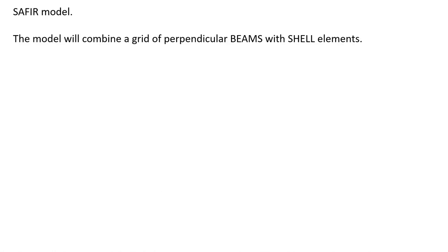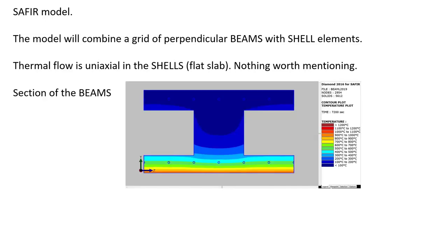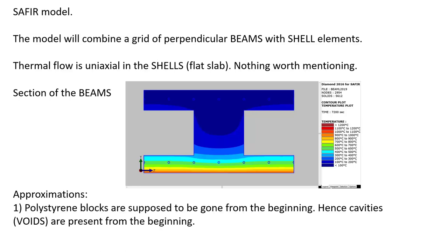The Saphir model will combine a grid of perpendicular beams and shell elements. The shell elements in the parts of the slab which is a flat slab. Thermal flow in the shells is uniaxial so there is nothing worth mentioning. The section of the beams would be like this: each beam finite element which has a section which is an H section, where you can recognize the rib which is between two insulating blocks. So each beam finite element would represent a rib between two insulating blocks. There are some approximations in that model. First of all the polystyrene blocks are supposed to be gone from the beginning. So the cavities are present from the beginning of the simulation. And of course the thermal model is 2D because it is supposed to be used in a beam element, whereas we know that cavities are in fact 3D.